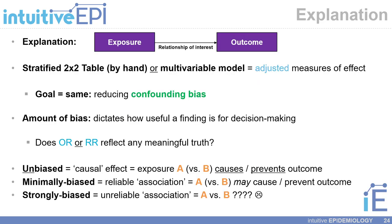As a recap: explanation in epidemiology involves looking at exposures and outcomes. We can use stratified 2x2 tables or multivariable models to estimate unbiased or adjusted measures of effect, mitigating confounding bias by considering extraneous variables. The amount of bias dictates how useful a finding is for decision-making — does the odds ratio or risk ratio reflect any meaningful truth? An unbiased odds ratio indicates a causal effect, minimally biased is a reliable association, and strongly biased is an unreliable association.